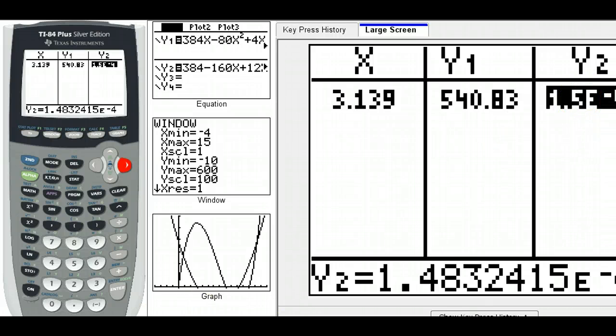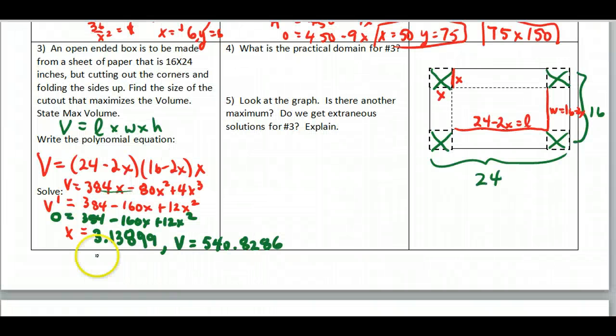So my x value is 3.13899. That's carried out too far. And then my volume is this. So that's what I can write. Now I ask here, what's the practical domain? Now you might have noticed I left out some answers.